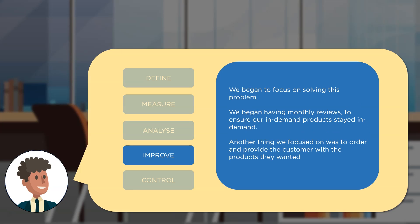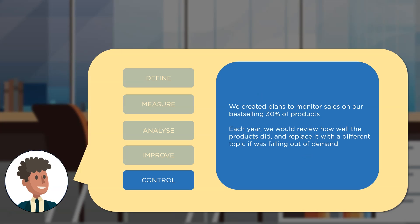In the Improve phase, now that they knew what was causing the problem they wanted to solve it. They began monthly reviews to make sure their in-demand products stayed in stock and focused on ensuring they could order and provide customers with the products they wanted. In the Control phase, they set up plans to monitor the sales of that top 30% of products. Each year they would review how well a product was selling and replace it if it had fallen out of favor.